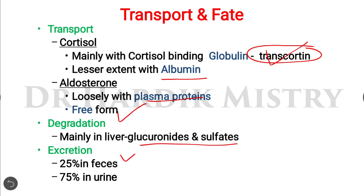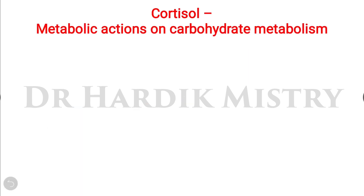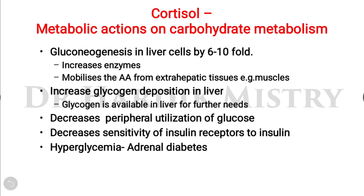Now for cortisol — the glucocorticoid hormone. Regarding metabolic actions on carbohydrate metabolism: cortisol increases gluconeogenesis in liver cells by 6 to 10 times. To activate this, it increases the gluconeogenesis enzymes inside the liver and mobilizes amino acids from extra-hepatic tissues such as muscles.